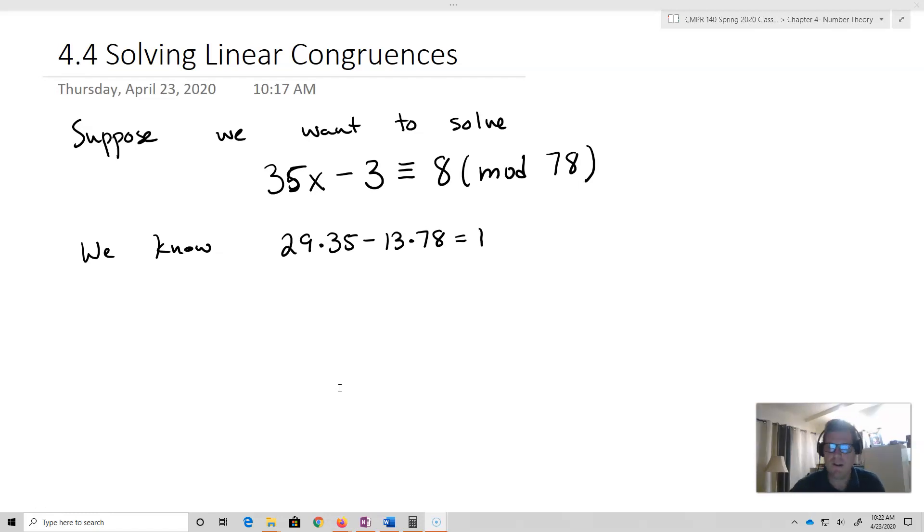Okay, so let's suppose we wanted to solve 35x minus 3 is equivalent to 8 mod 78. And what we know from earlier is that 29 times 35 minus 13 times 78 is equal to 1.